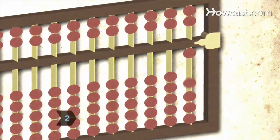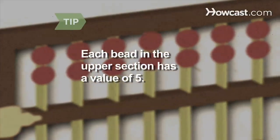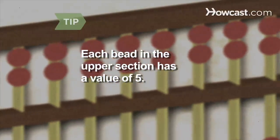Move the corresponding number of beads on the rightmost lower deck column toward the central crossbeam to count from 1 to 5. Each bead in the rightmost upper deck column has a value of 5.